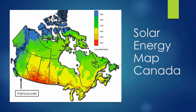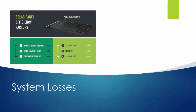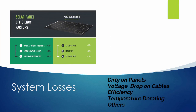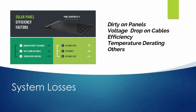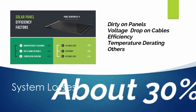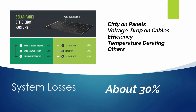However, we won't be able to use all of that power because there are some losses to take into account. We could have some dirt on the surface of the panel, there will be voltage drops on the cables between the solar panel and the charge controller, and there are also some inefficiencies in the way the controller regulates power to charge the batteries. Taking all of these into account, we can expect system losses of about 30%. So taking our 372 watt hours minus 30% gives us a net value of 260 watt hours.